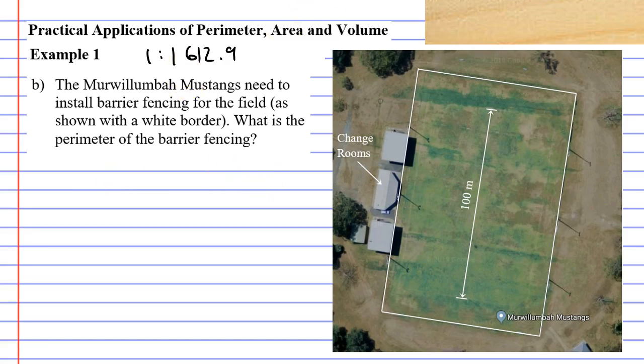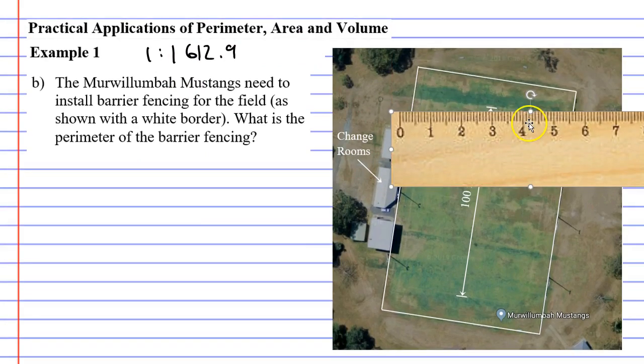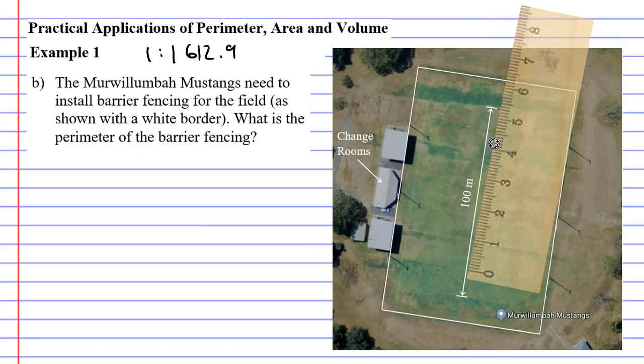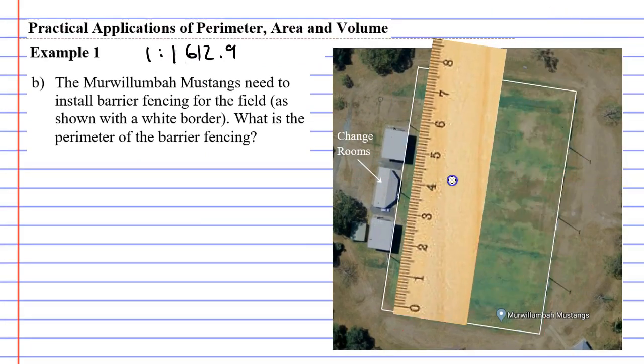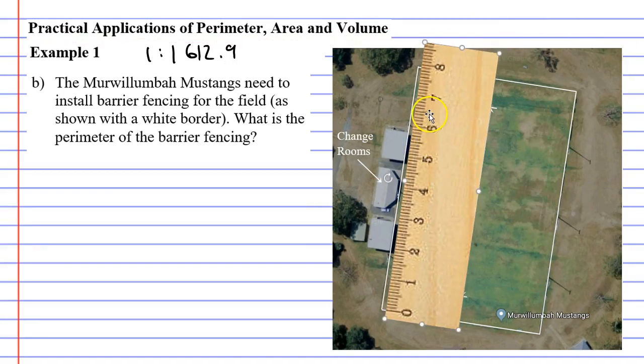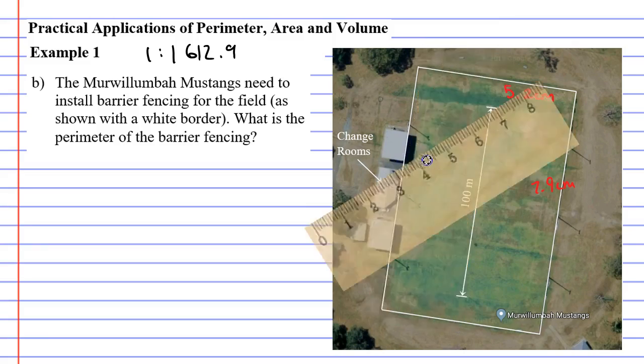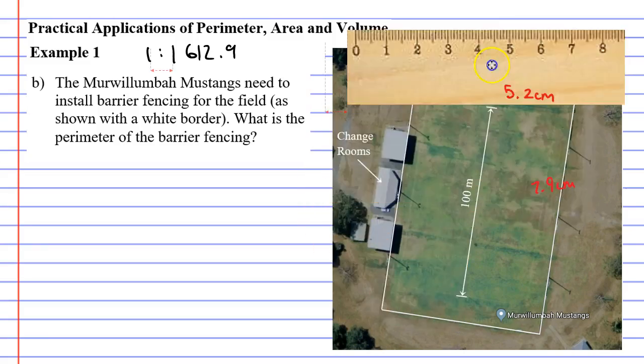If we want to find the perimeter of the barrier fencing, we need to grab our ruler and measure the lengths of the edges. I already did this earlier. I found that the length of our barrier fencing was 7.9 centimetres, and the breadth was 5.2 centimetres.